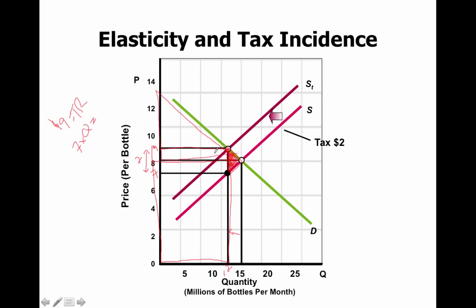Our old consumer surplus: this portion is no longer consumer surplus — it's now becoming the government's tax revenue. And what used to be producer surplus is also no longer going to the producers; that's the government's revenue too. This triangle is gone — that's deadweight loss. This is all the revenue that goes to the government. This is consumer surplus. This is producer surplus. Total revenue is this whole box.